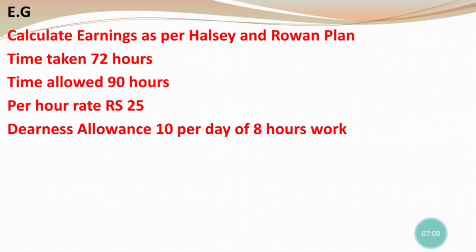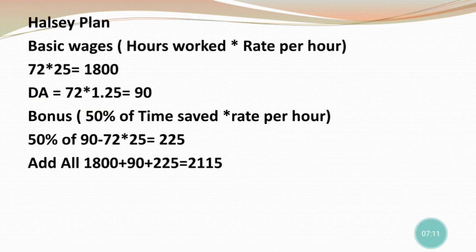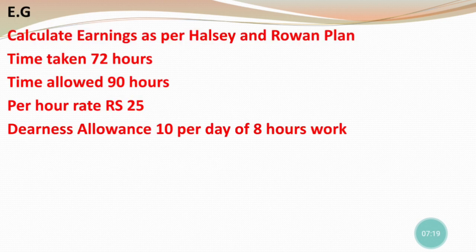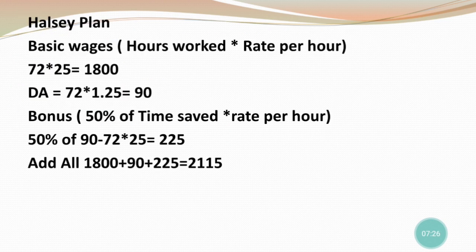Now applying the Halsey plan formula. Basic wages formula: hours worked × rate per hour. Hours worked equals time taken, which is 72. Rate per hour is 25. So basic wages = 72 × 25 = 1800.